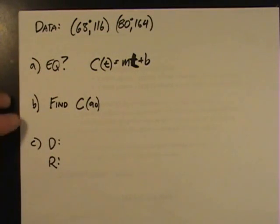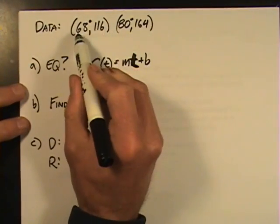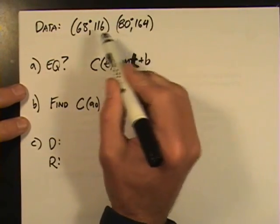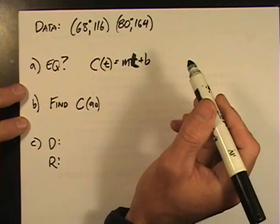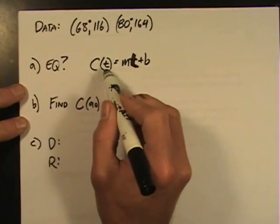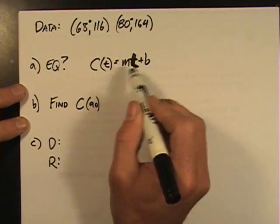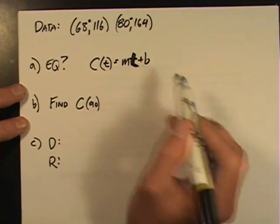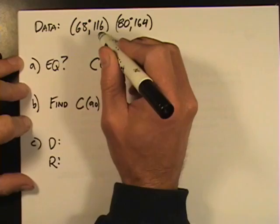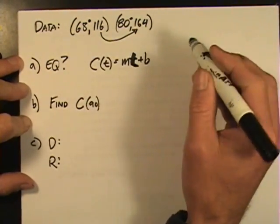Here is what problem 21 looks like. I've written out the data points you can find in the book. At 68 degrees, we get 116 chirps. At 80 degrees, we get 164. We've got an equation that we're looking to write: chirps based on temperature, equal to mt plus b. So, here's our slope, that's our variable temperature, and that's our intercept. We find the slope first by asking what is the change in y and then the change in x. It's rise over run.